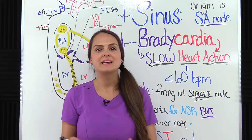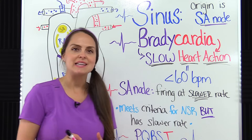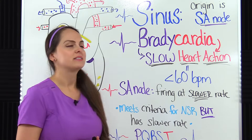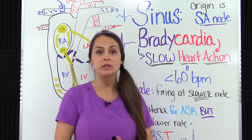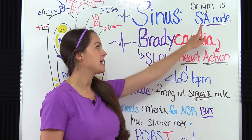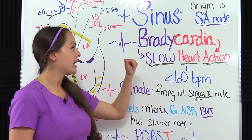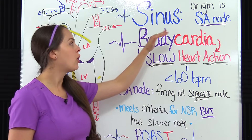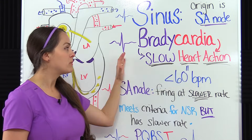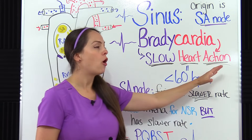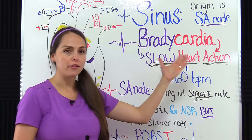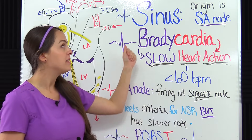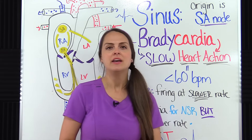What is sinus bradycardia? Let's take its name apart. Sinus tells us that we have a heart rhythm that is originating in the SA node. Bradycardia — brady means slow, cardia means heart action. So we have slow heart action, or in other words, a slow heart rate rhythm that is originating in our SA node.